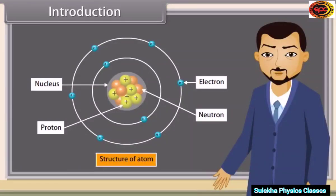Good question, Rakesh. As you know, all objects are made up of different materials like plastic, rubber, iron, etc. They have different arrangements and types of molecules, and a molecule is a group of two or more atoms. So the fundamental unit is the atom. Let us discover more about atoms.